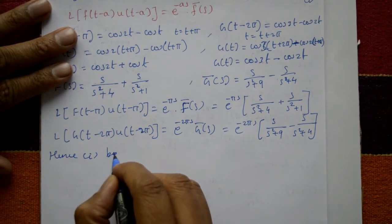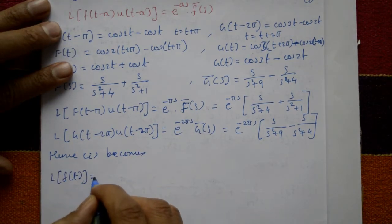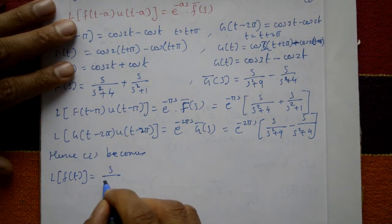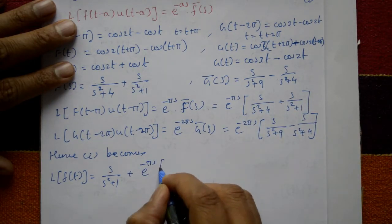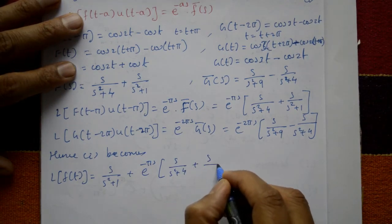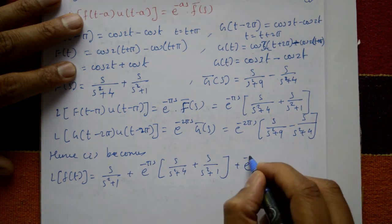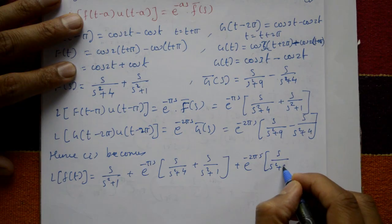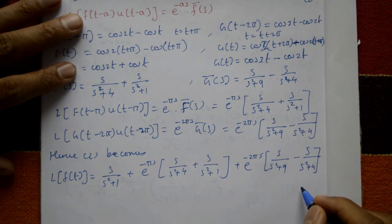Equation one becomes: L{f(t)} = s/(s² + 1) + e^(−πs) · [s/(s² + 4) + s/(s² + 1)] + e^(−2πs) · [s/(s² + 9) − s/(s² + 4)]. This is the required solution.